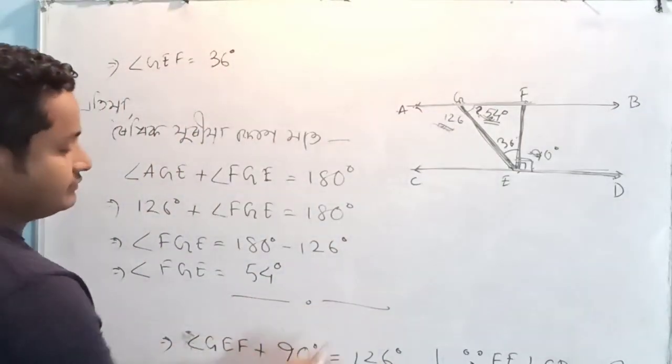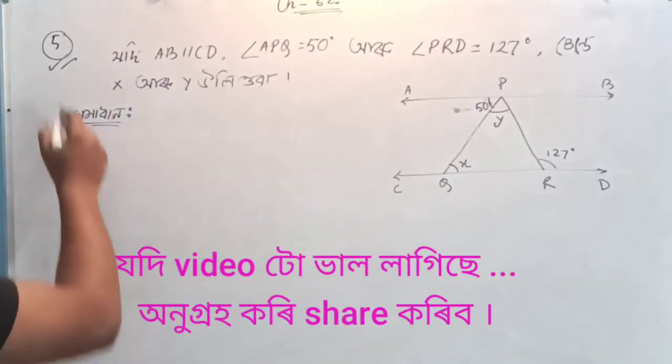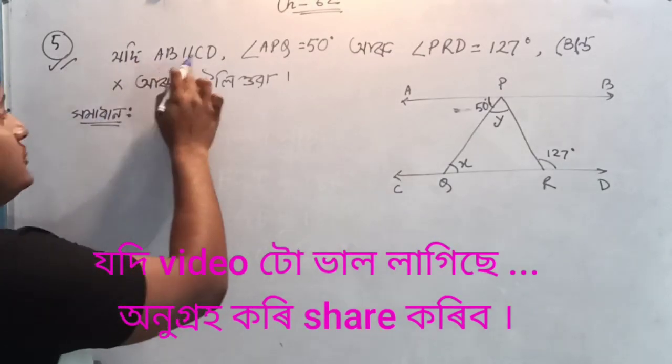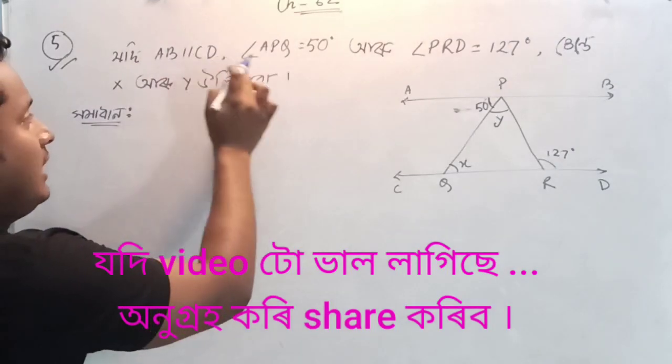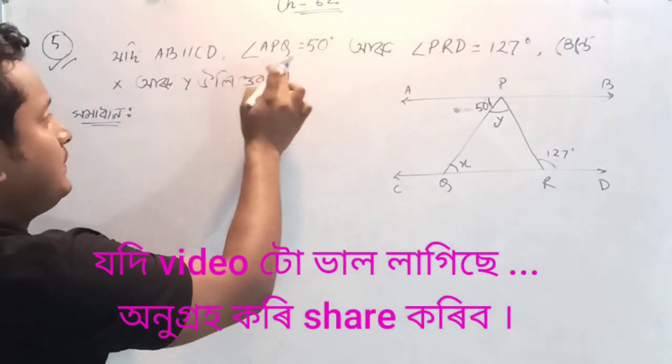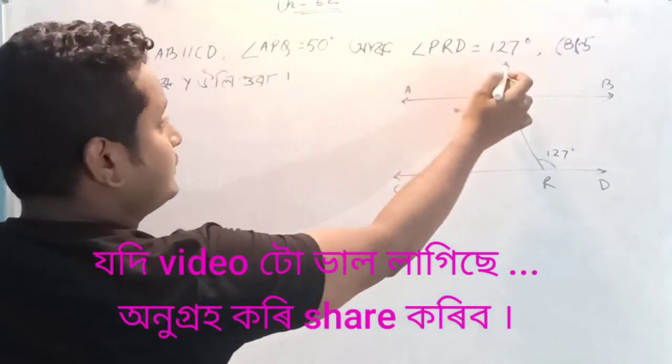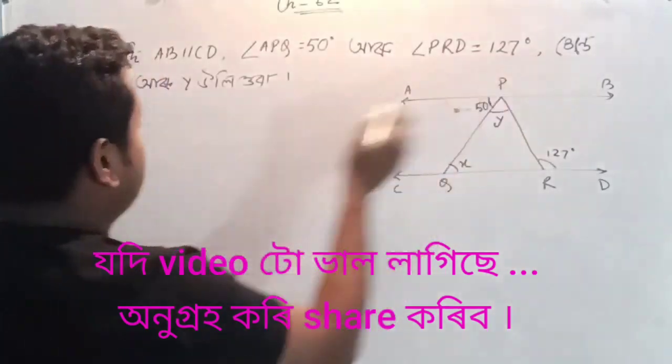Thank you. Question number 5. A, B, homontrol. APQ is equal to 50 degrees. APR is equal to 127 degrees.